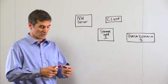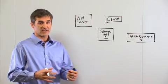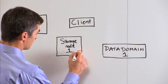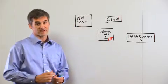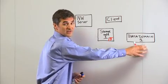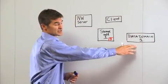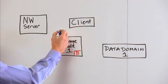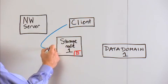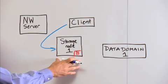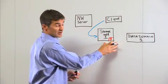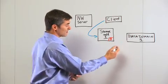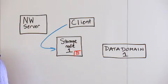Let's start with what we've done with the actual integration. We've taken the Data Domain Boost library and embedded it inside the Networker storage node code. As my Networker client runs a backup to the storage node, the stream gets put to the storage node. The storage node does a comparison, leveraging the Boost library with the Data Domain system, and looks for any unique data, therefore sending only unique data to the Data Domain system.